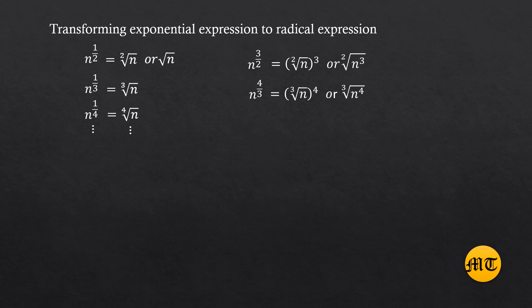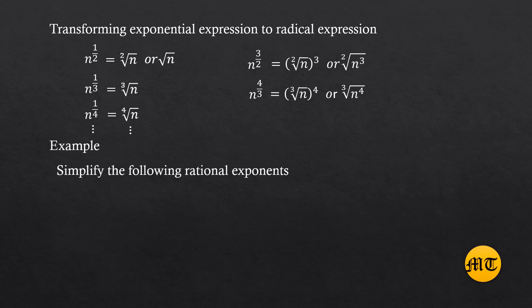Let us now move on to our main topic, which is rational exponents. Let us have an example: simplify the following rational exponents. We have twenty-seven raised to two over three. We can factor out the exponent, so it becomes twenty-seven raised to one-third, in parentheses, raised to two. Transform twenty-seven raised to one-third into radical expression — it becomes the cube root of twenty-seven, raised to two.